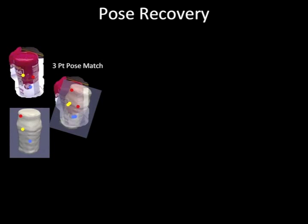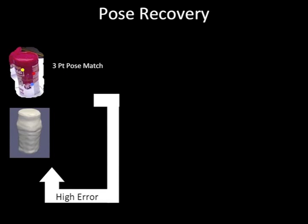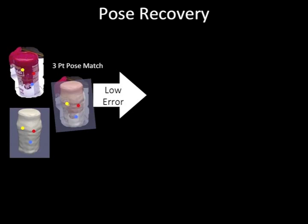To actually do this pose match, we use an off-the-shelf non-linear least squares optimization solver, because there's often some noise in the three points. If the error from the solver is high, then that means, like in this case, we haven't found a good match, and we're going to repeat this process. So we're going to pick three new randomly chosen points, find out where they appear on the object model, and then try to find a pose which aligns them. If we have a good match, the points will be close together, and the error will be low, so we can continue to the next phase of the process.